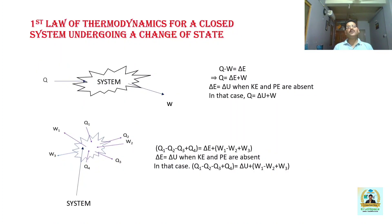Then we will discuss about the first law of thermodynamics for a closed system undergoing a change of state. You can see this example: Q is the amount of heat flowing into the system producing W amount of work. It was observed that W amount of work out of Q is converted into work and the remaining amount of energy is stored as increase in energy. Q minus W is equal to ΔE. This ΔE represents the increase in energy not the energy.